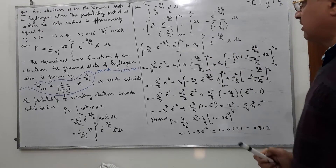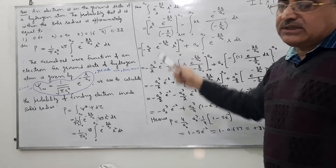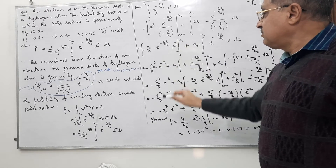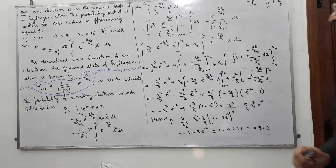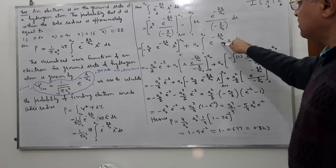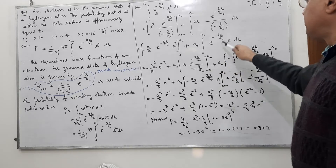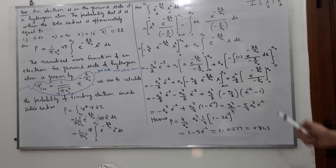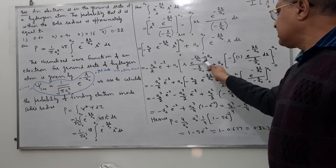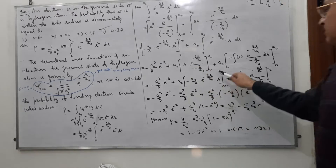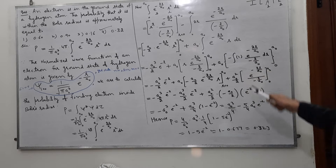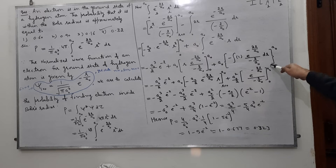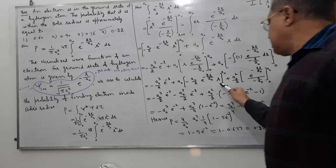Integration by parts: first function times integration of second minus integral of (differential coefficient of first times integral of second). We apply definite integration limits. Upper limit a₀ is substituted: we get a₀ values here and here. Lower limit is 0 — zero times something is zero. We also get a₀ squared over 2 terms, and integration of e^(−2r/a₀) gives e^(−2r/a₀) divided by (−2/a₀), with limits 0 to a₀.